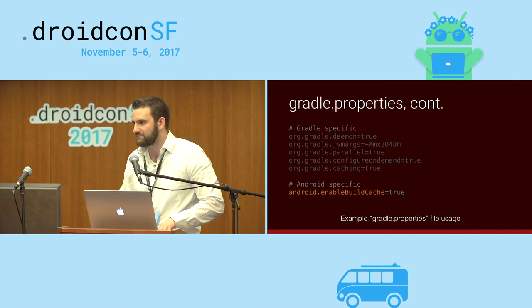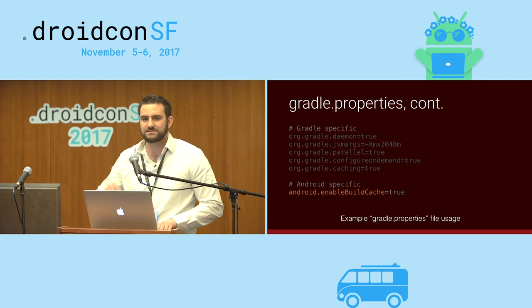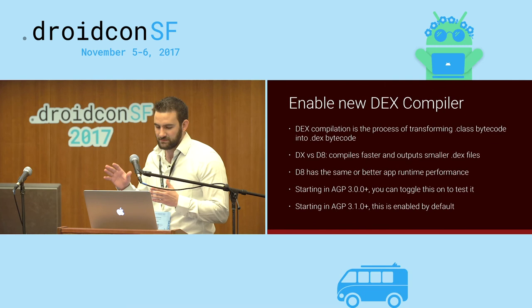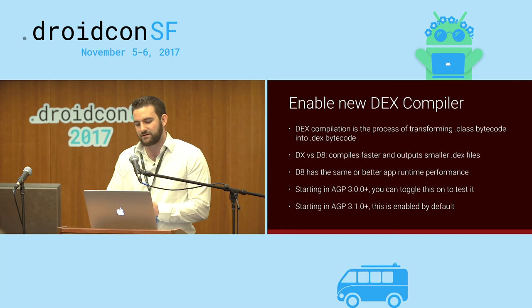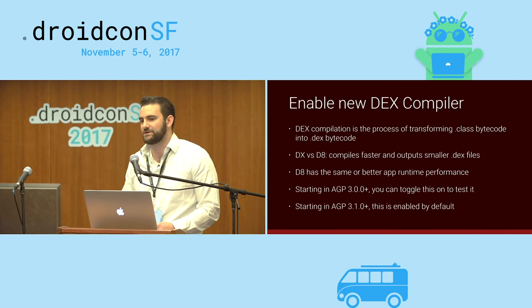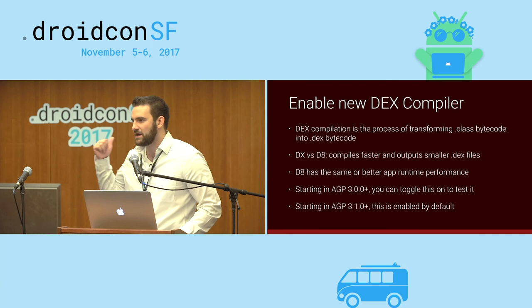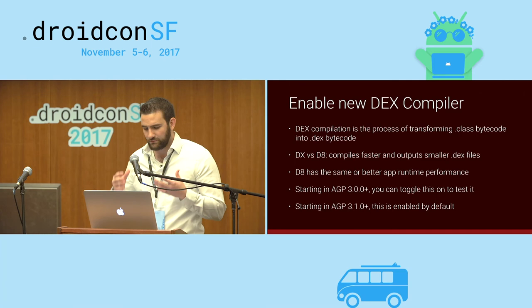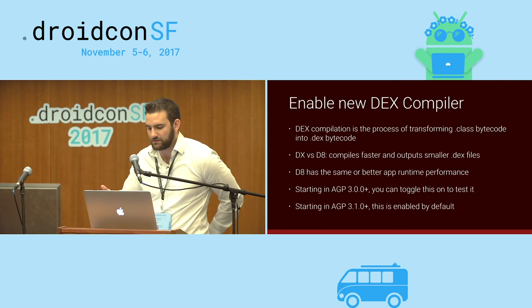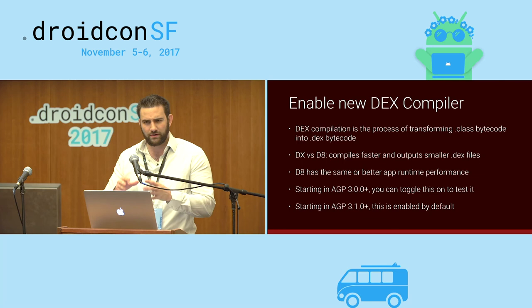The next few slides cover new things that have recently come out. Something I introduced recently is the new D8 dex compiler — it's replacing the old DX compiler. Dex compilation converts Java .class bytecode to .dex bytecode. D8 compiles faster and outputs smaller dex files compared to DX, with the same or even better runtime performance. You can toggle D8 in Android Gradle plugin 3.0, and it's available in 3.1 alpha as well — I highly encourage you to try it out even though it's alpha.